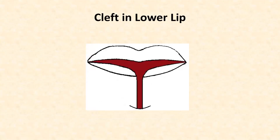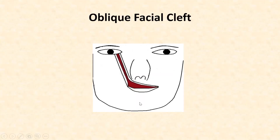A cleft may also occur in the lower lip. The reason is that the two mandibular processes do not fuse with each other properly, leading to the formation of a cleft in the lower lip, as seen in the figure. The defect usually extends into the jaw.